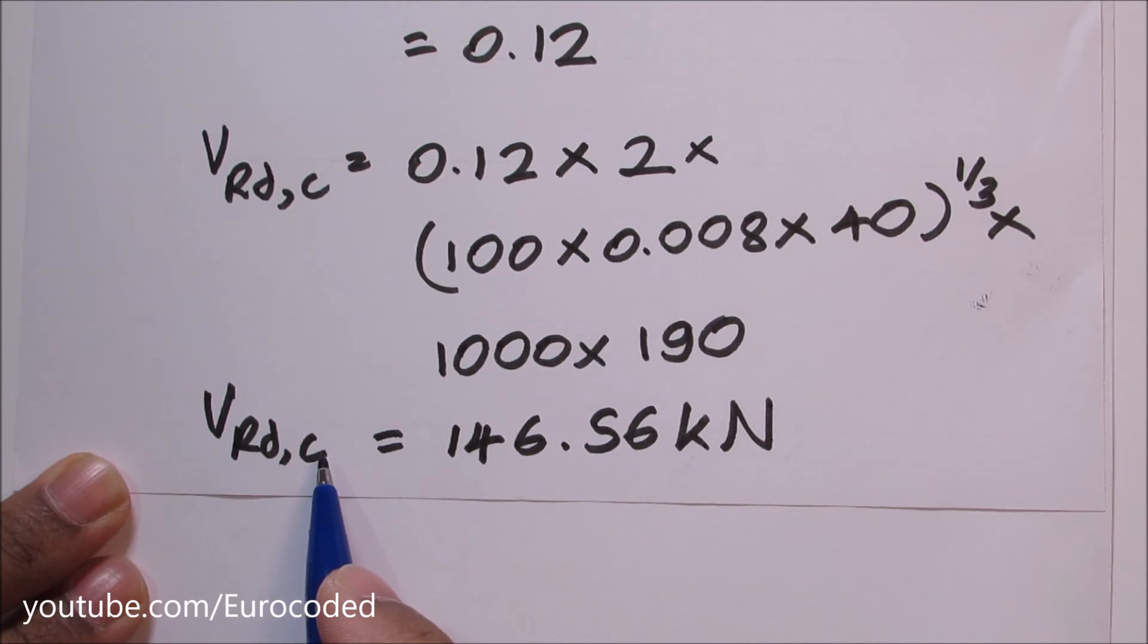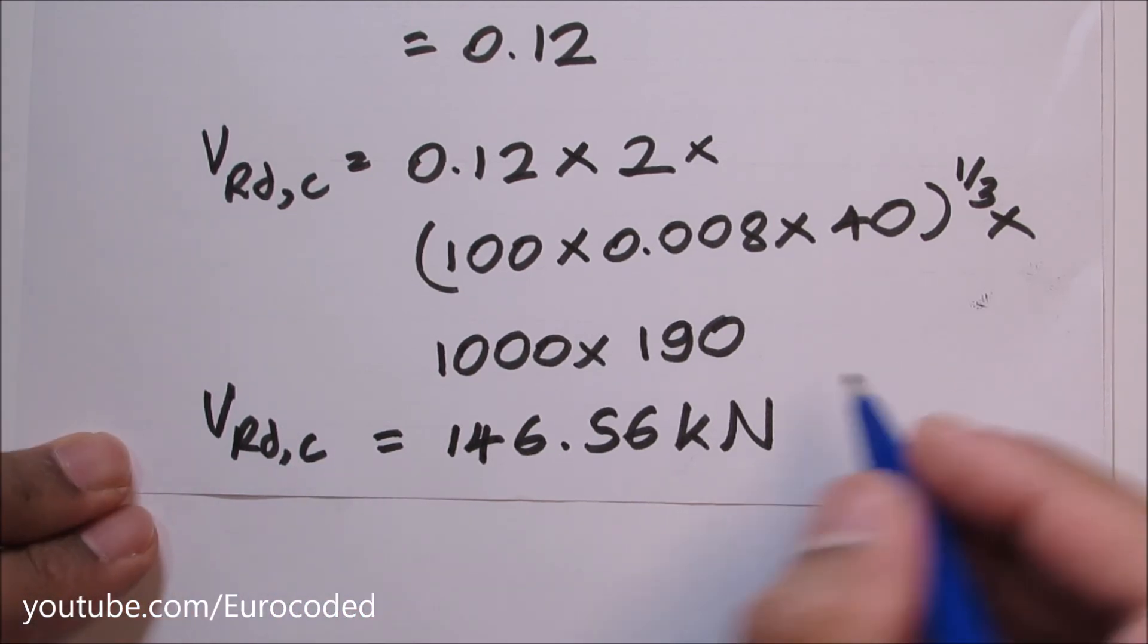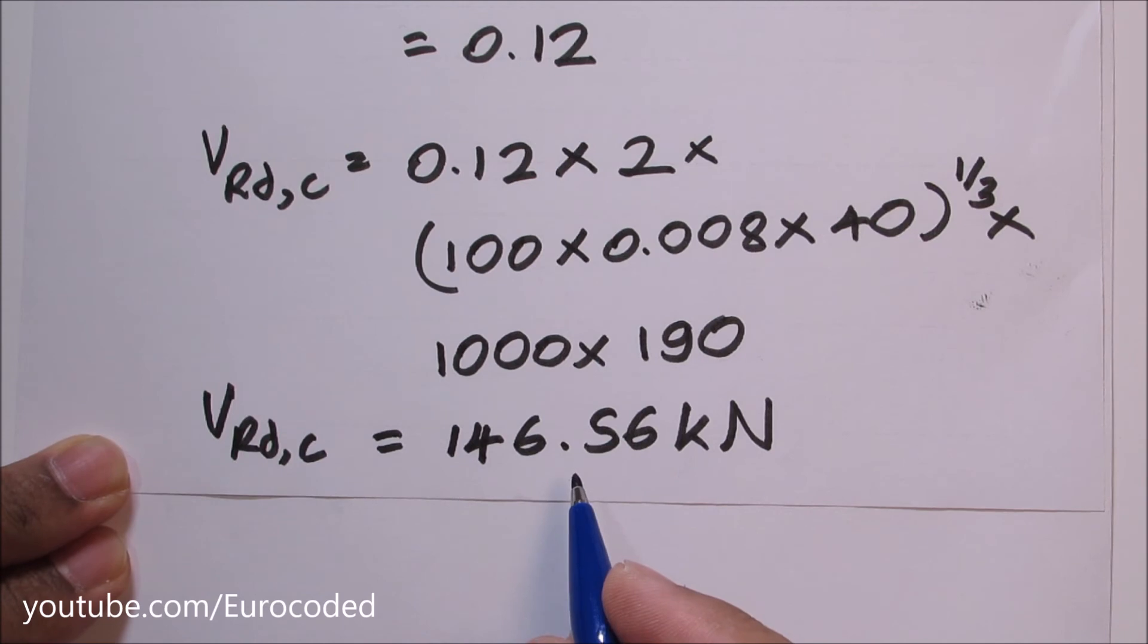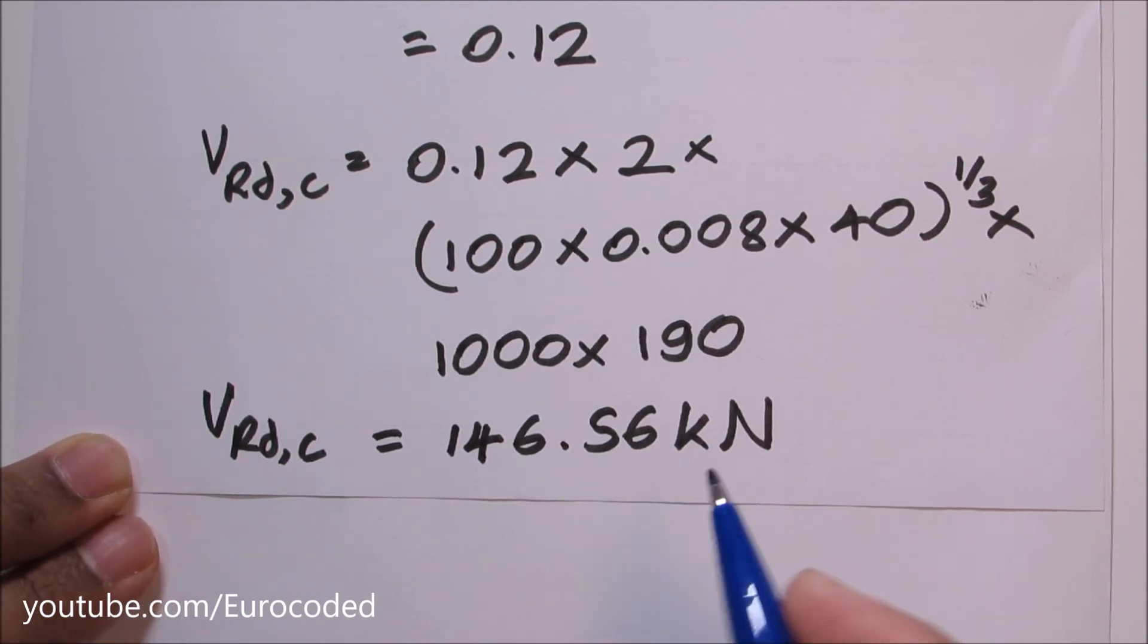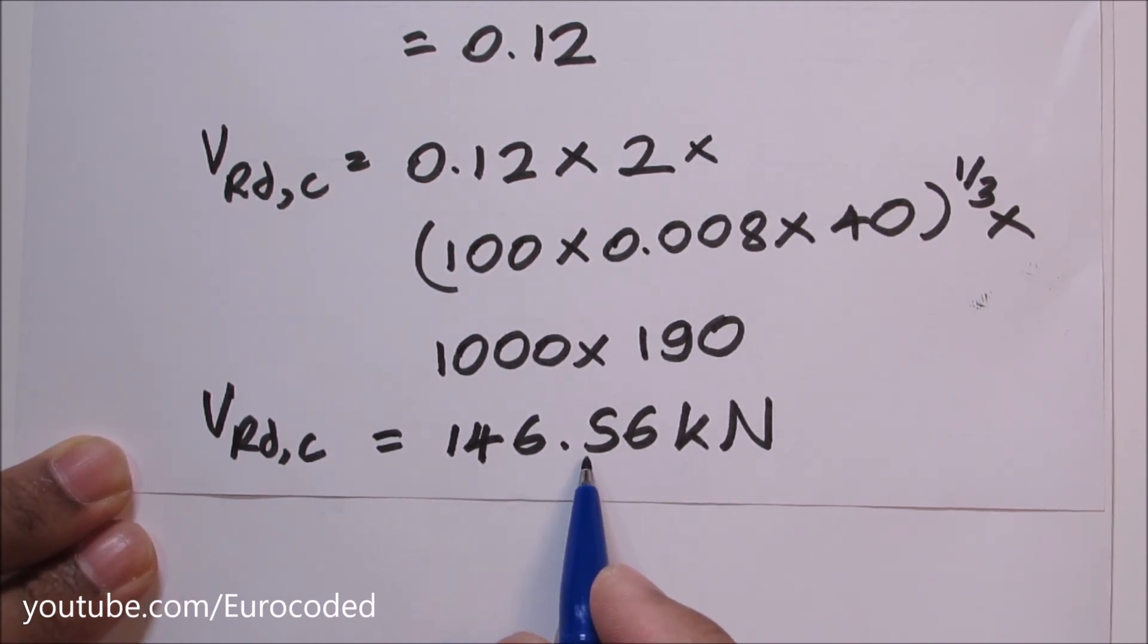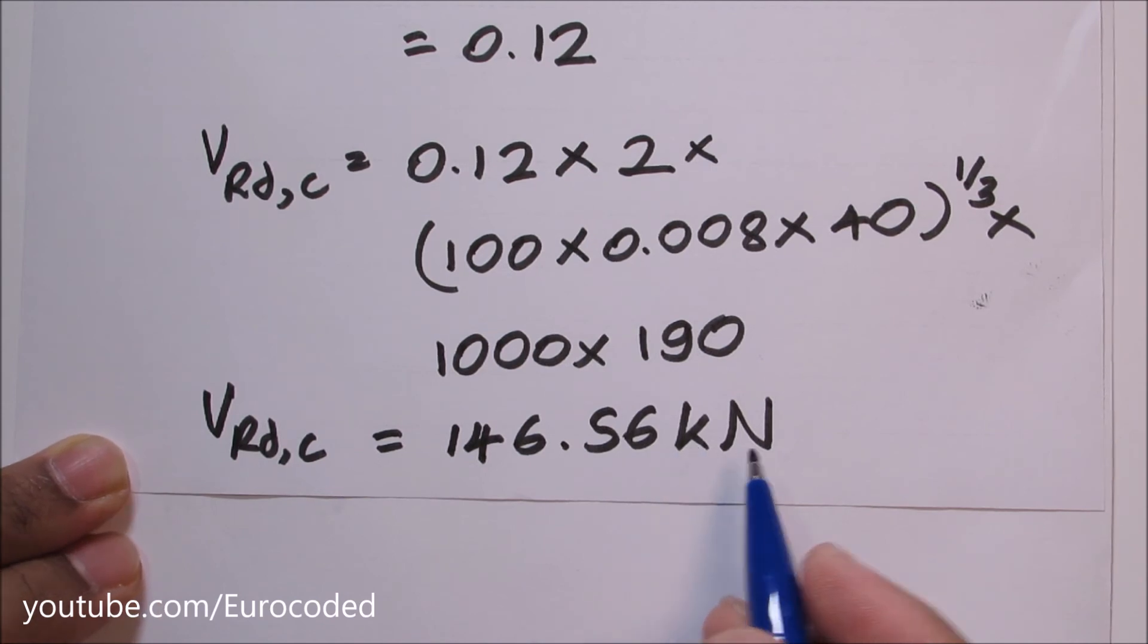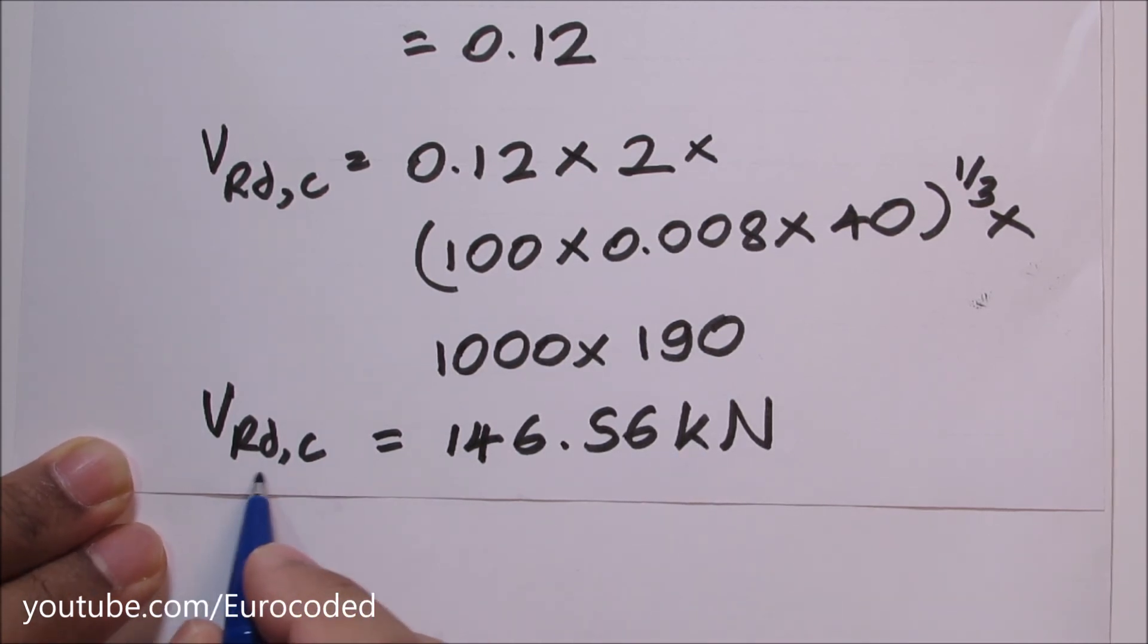And that is the minimum value of V_Rd,c hence our ultimate shear resistance of reinforced concrete slab is 146.56 kilonewtons without any design shear reinforcement.